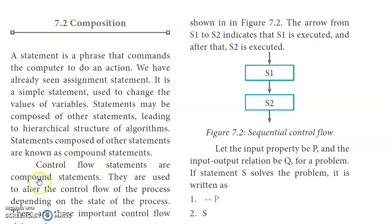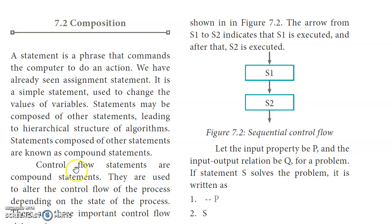Control flow statements are compound statements. Control flow statements are used to alter the control flow of the process depending on the state of the process. When an algorithm executes and one or two statements execute, it will be in one particular state. The state is determined by the variable values. So depending on the state of the process, we will execute the flow of control — that is the control flow statement.